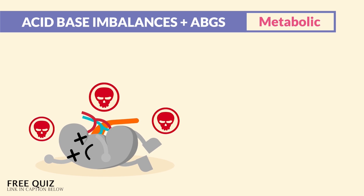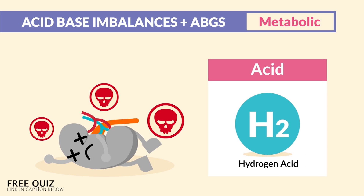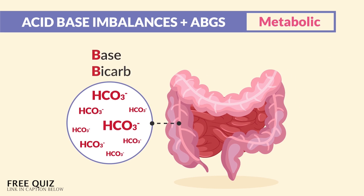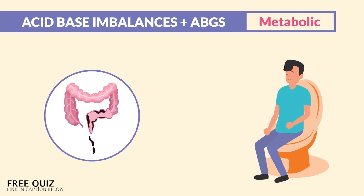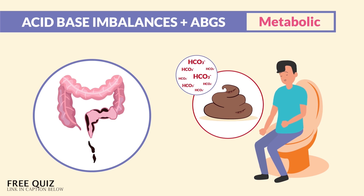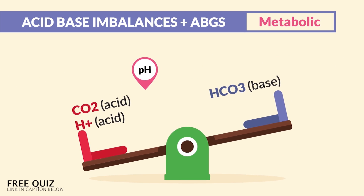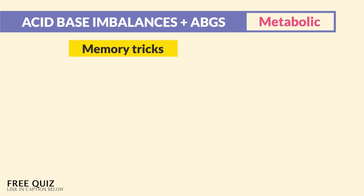Now what about renal failure? We have broken kidneys, so can the kidneys excrete those hydrogen ions via the urine? No — acid is retained, putting the body into acidosis. And lastly, we know that the intestines hold more base. So if the client has diarrhea and they poop out all their base from the body, what are we left with? Only acid — so the body goes into acidosis.